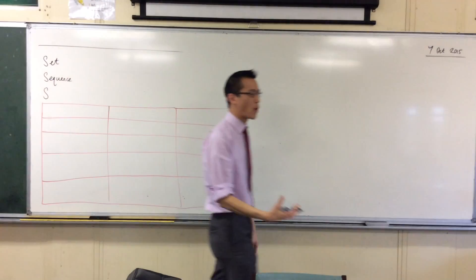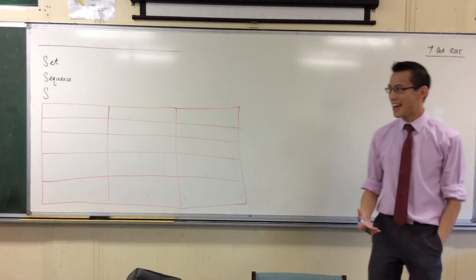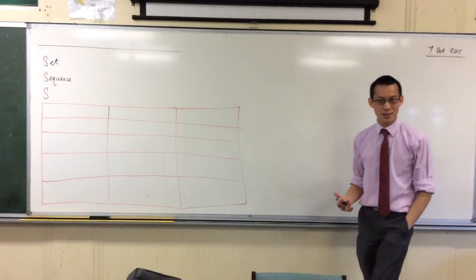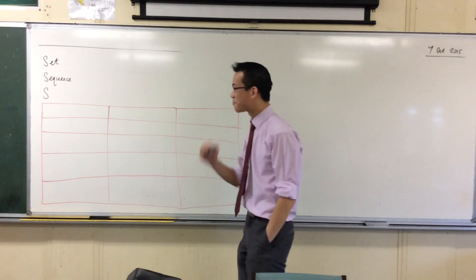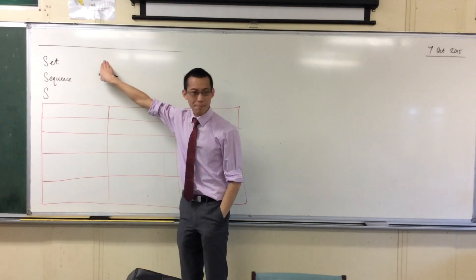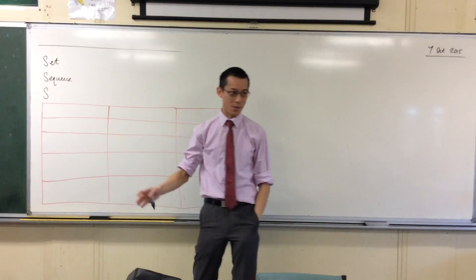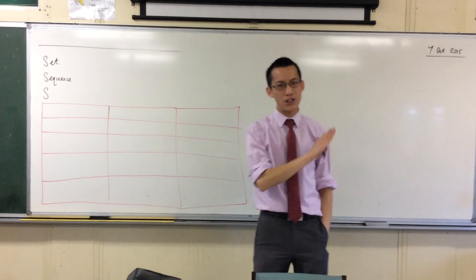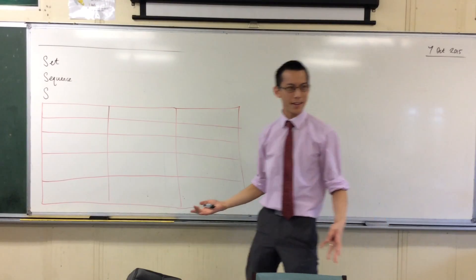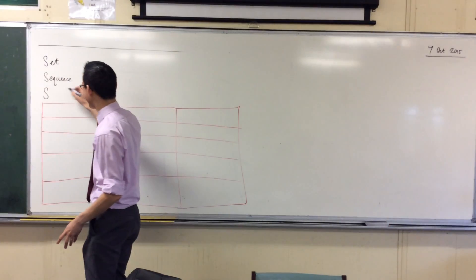If something is sequential, it has order to it, right? A, B, C, D is a different sequence to D, C, B, A. So a set plus order equals a sequence, right? And then if you do one more thing, if you take a sequence and you add up all the terms, what do we call that? A circle. We call them a series.